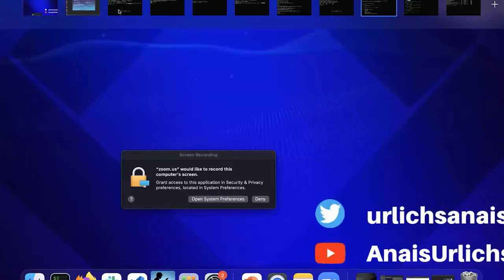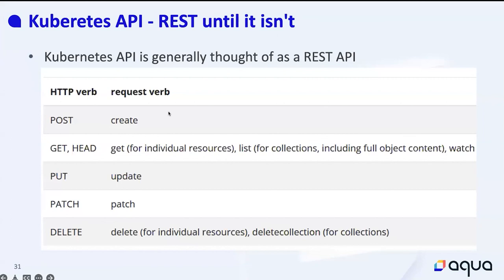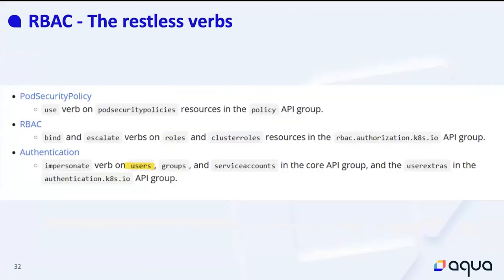Kubernetes ultimately follows a REST API structure for most of it. The verbs are generally thought of as REST API operations for different changes you can make to resources. However, there are also non-REST verbs within RBAC. Kubernetes itself doesn't have an understanding of users — RBAC operates on users and groups externally.